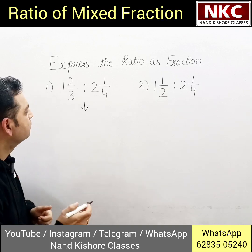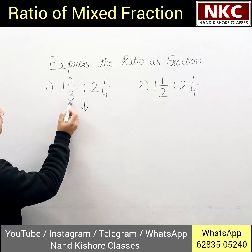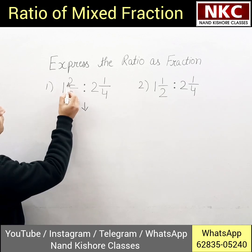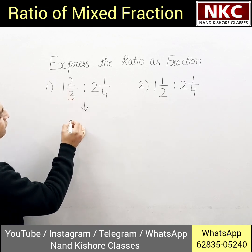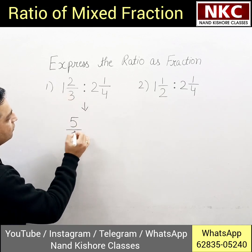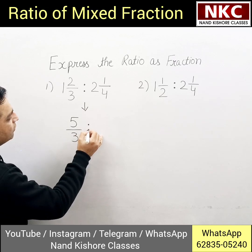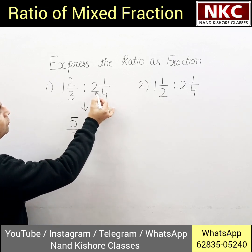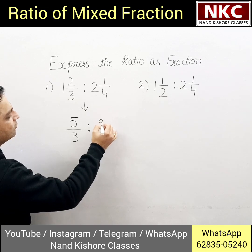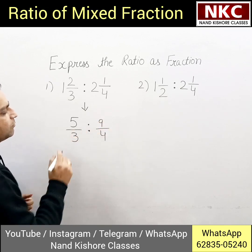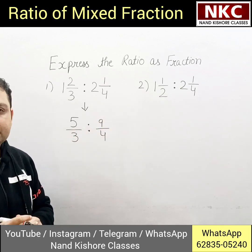Let us just do it. 3 multiply 1 is 3, and 3 plus 2 is 5. So it becomes 5 over 3. Then, 4 multiplied by 8 — wait, 8 plus 1 is 9. So it becomes 9 by 4. This is what we have.